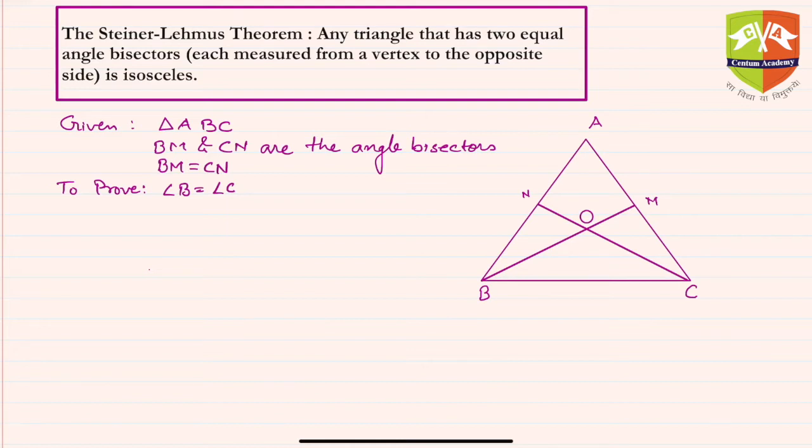Now we will be using the theorem proved in the previous session to prove this particular Steiner-Lehmus theorem. And what was that theorem? It suggested that in a given triangle—if you have not covered that previous session, I would suggest just go back and have a look at that particular theorem.